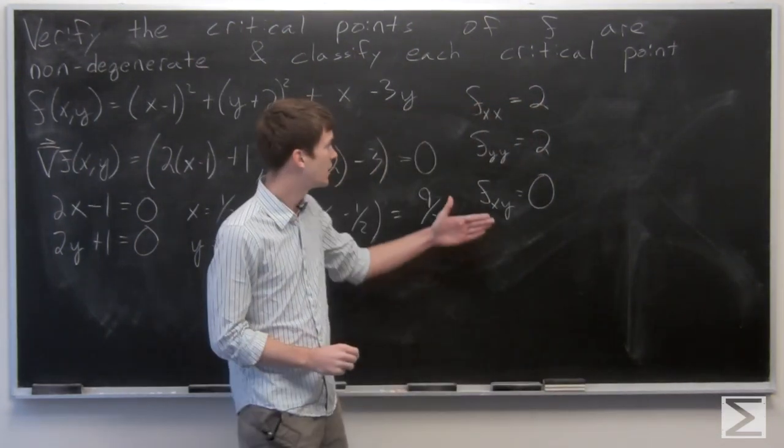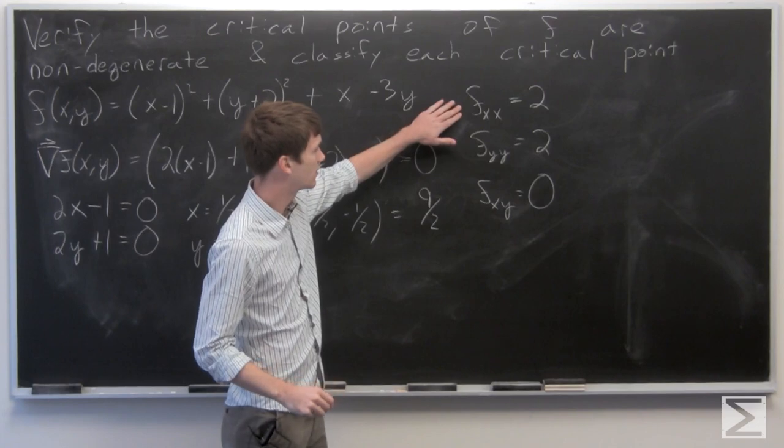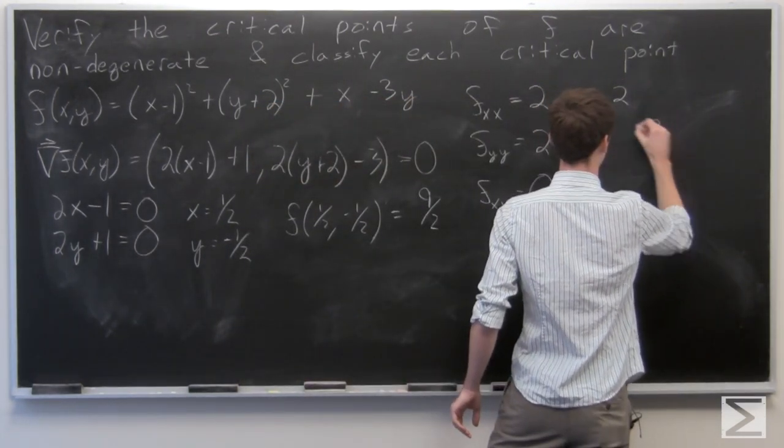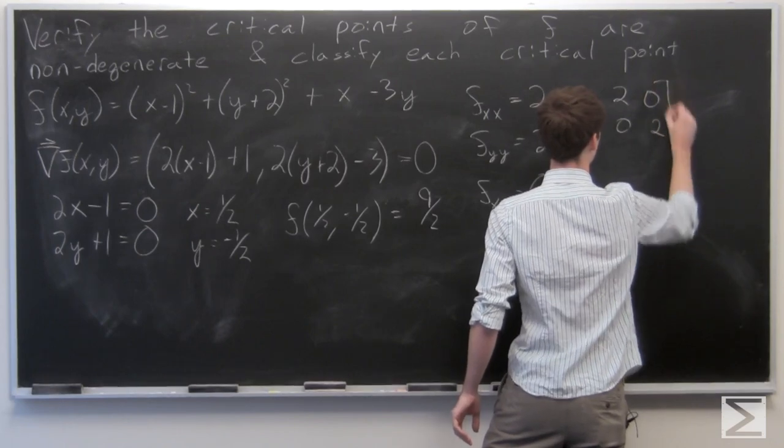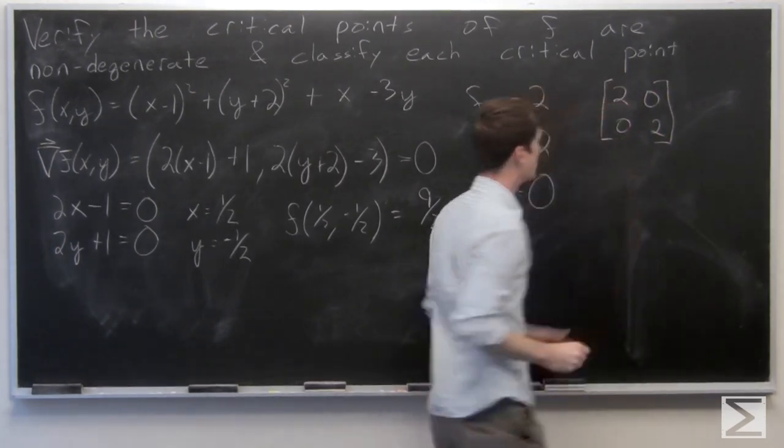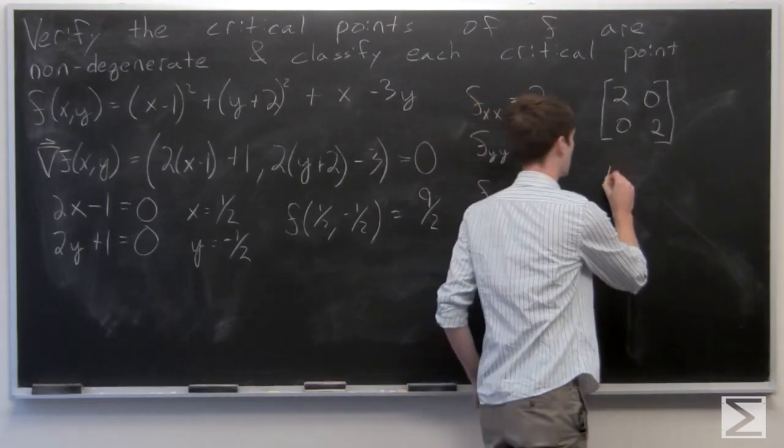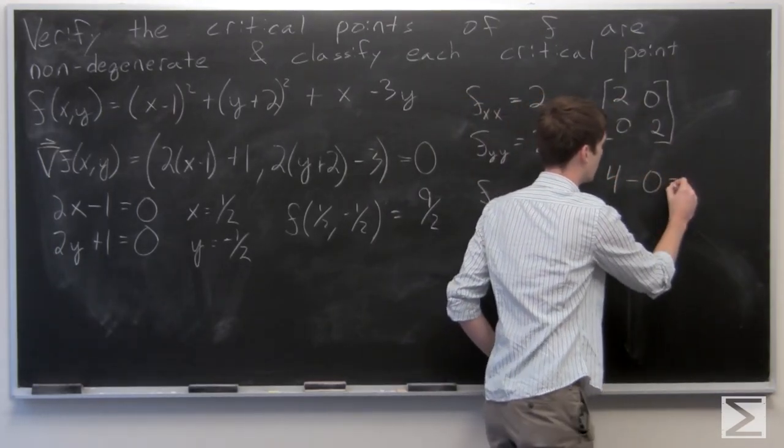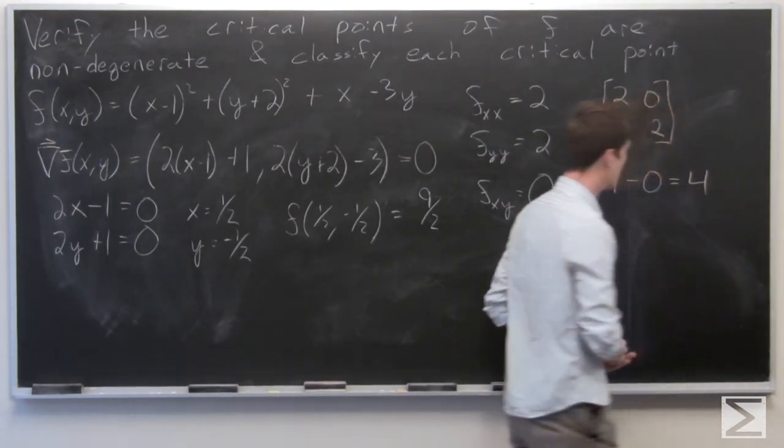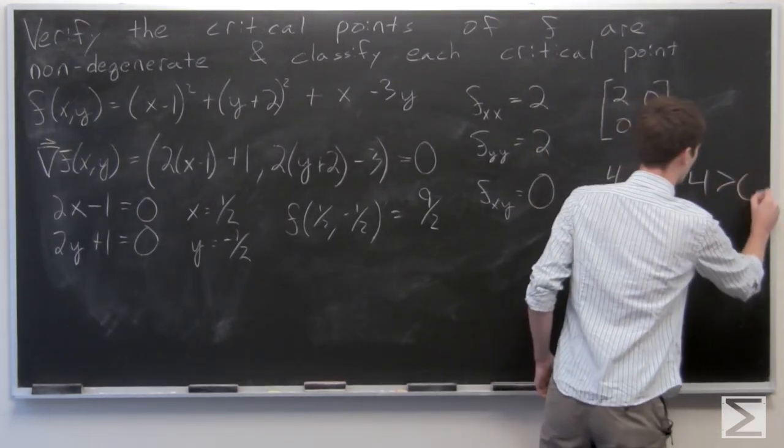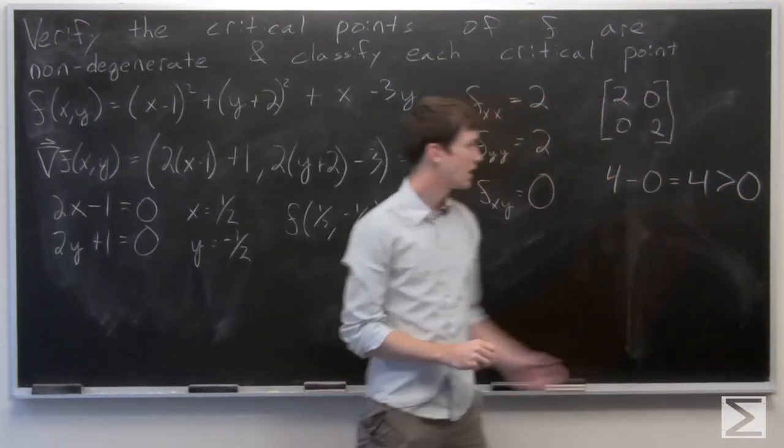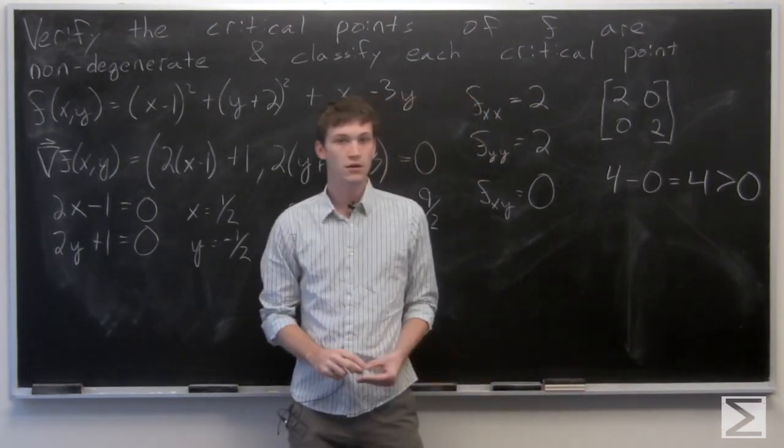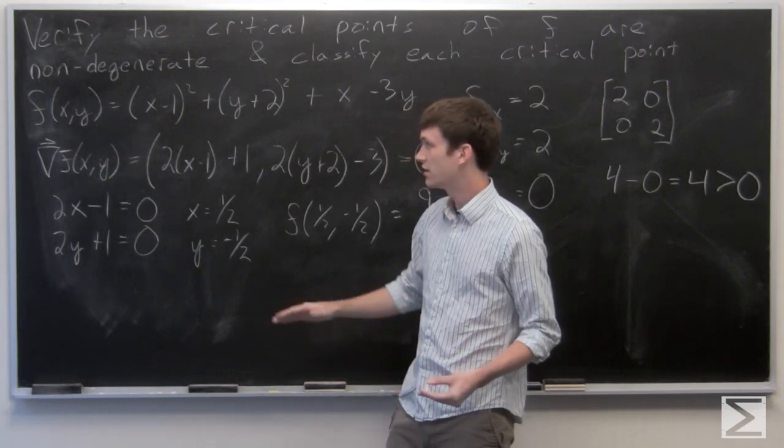So our Hessian matrix is defined as [2, 0; 0, 2]. So our determinant is equal to 4 minus 0, which is 4. So that's more than 0. It's not equal to 0, so that tells us that our critical points are non-degenerate.